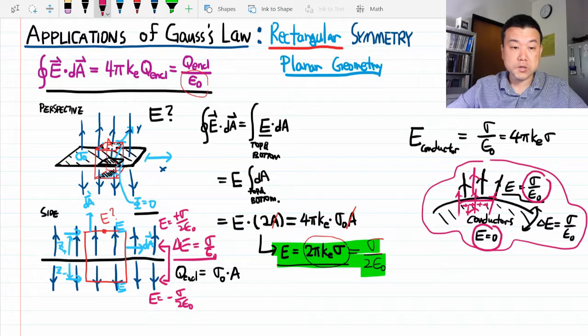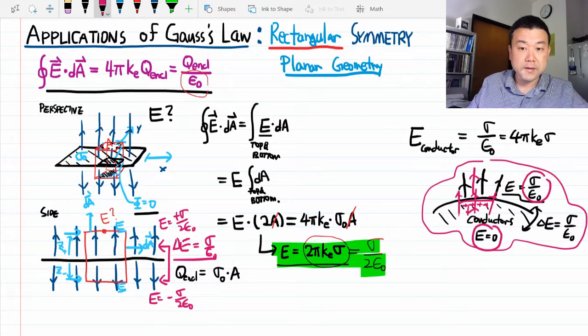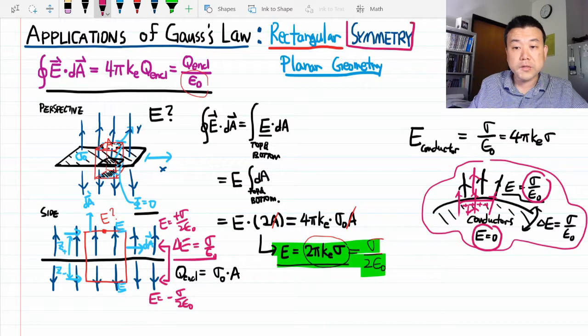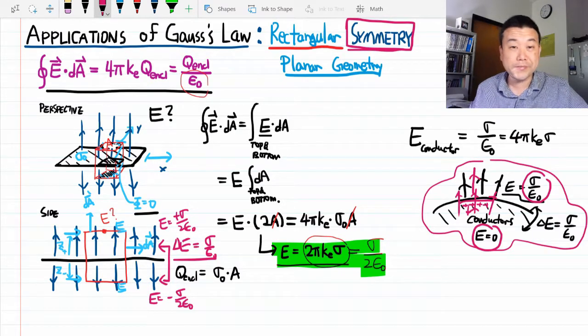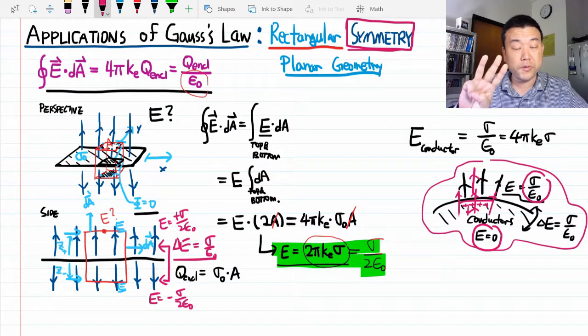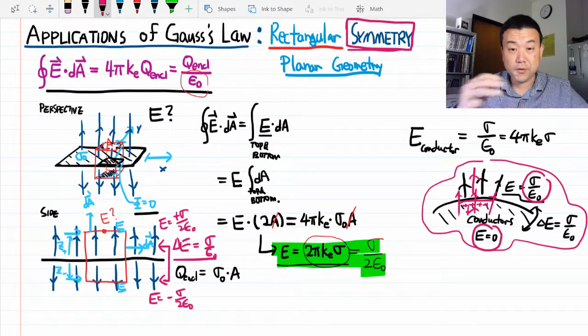Now, these applications of Gauss's law does have a limitation, let me end with that, is that it relies on symmetry. All the precise arguments we made, you cannot make them if you don't have symmetry. So this is actually good for you, because this means there's really only three types of symmetry that you can use Gauss's law on, and use all three right now.